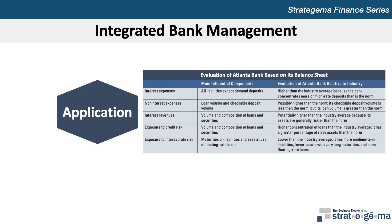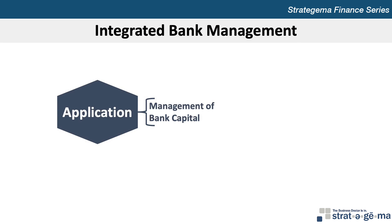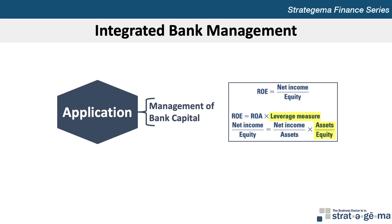This exhibit summarizes the evaluation of Atlanta Bank against the industry. You should pause the video and carefully review the main influential components and Atlanta's performance relative to the industry. An evaluation of Atlanta Bank should also include an assessment of its capital. The future performance of Atlanta is influenced by the amount of capital that it holds, and it needs to maintain at least the minimum capital ratio required by regulators. However, if Atlanta Bank maintains too much capital, each shareholder will receive a smaller proportion of any distributed earnings. A common measure of the return to shareholders is return on equity, or ROE, calculated as net income divided by equity, where equity represents the bank's capital. ROE can also be broken down into its constituent components of return on assets, or ROA, and a leverage measure. ROA is calculated as net income divided by assets, and leverage as assets divided by equity. The greater the leverage measure, the greater the amount of assets that are available per dollar's worth of equity.